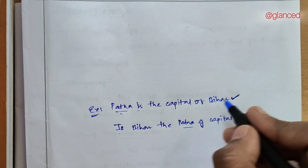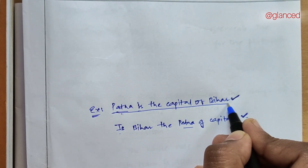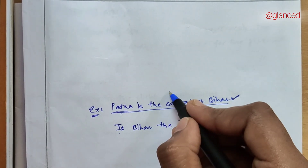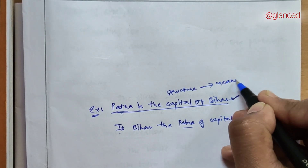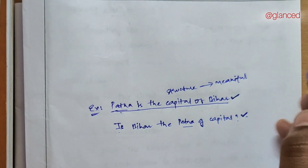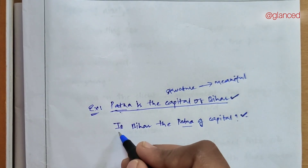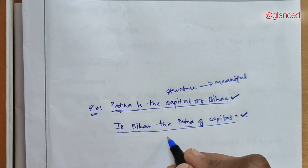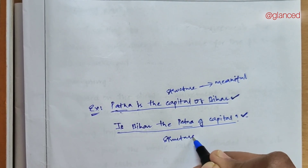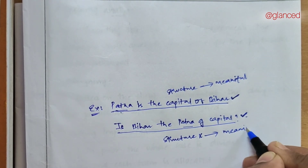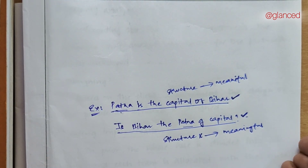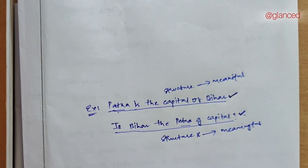The first sentence is formed by following a particular structure and it is conveying some meaning — so it is a meaningful sentence. Whereas the second sentence is formed by some particular words but it is not following any structure, so it is not meaningful. This shows that structure is very important in the formation of a sentence, and that structure is nothing but syntax.